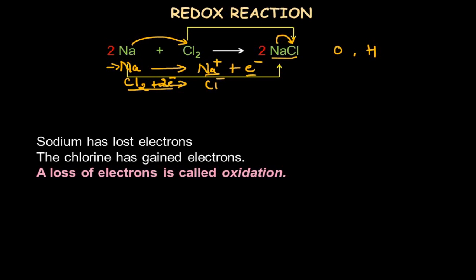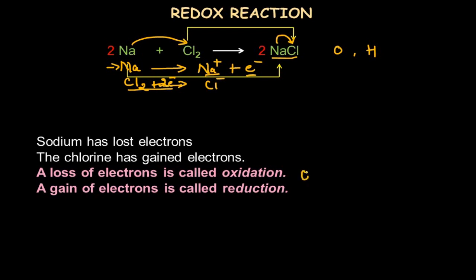In terms of electrons, we can say that loss of electron is called oxidation and gain of electrons is called reduction. To remember this, you can use the mnemonic OIL RIG: Oxidation Is Losing electrons, Reduction Is Gaining electrons. That is the easiest method to remember oxidation and reduction in terms of electrons.